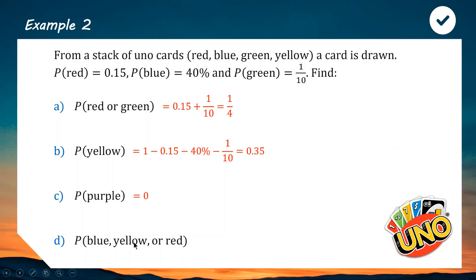For the last one, we're doing blue, yellow, or red. We use the same trick from the first question, red or green. We'll do probability of blue plus probability of yellow plus probability of red and we'll get our answer. So we'll do blue from the question, 40%, yellow from part B we figured that out, it was 0.35, and red again from the question is 0.15. Putting that all together, we get 90%, which makes sense because green was the only one left out and green was 10%. So if you add on the green, you get 100%.